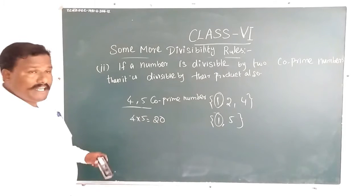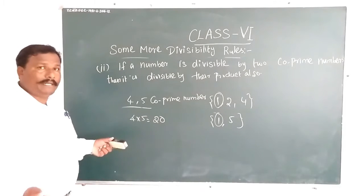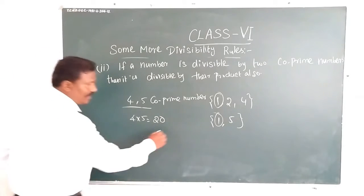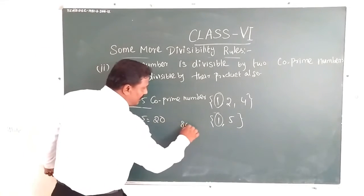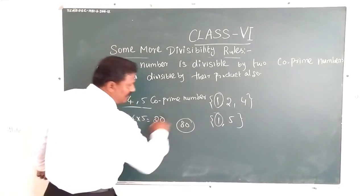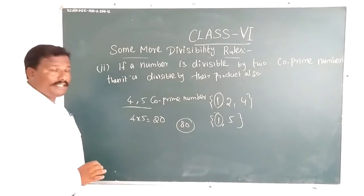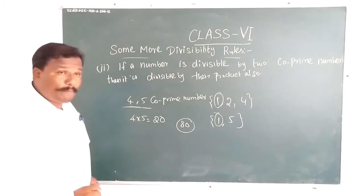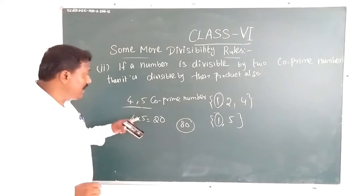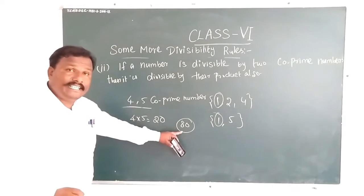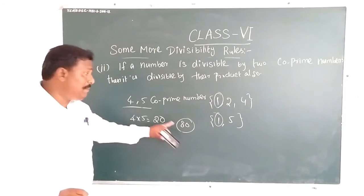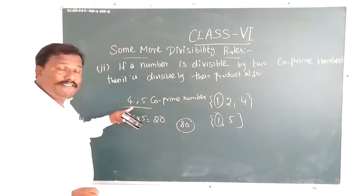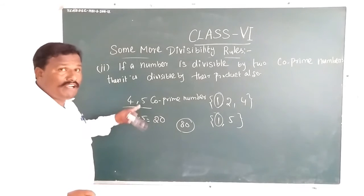For example, take 80 as the number. The number 80 can be divided by both 4 and 5.